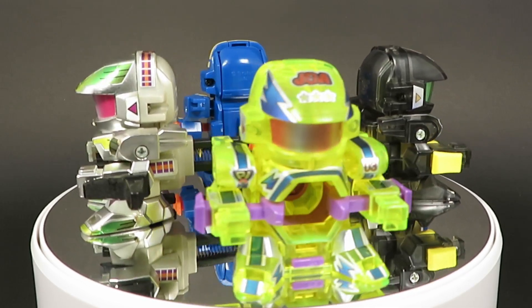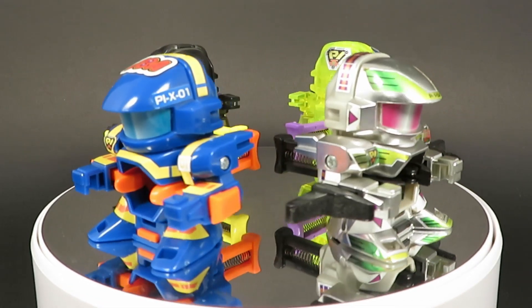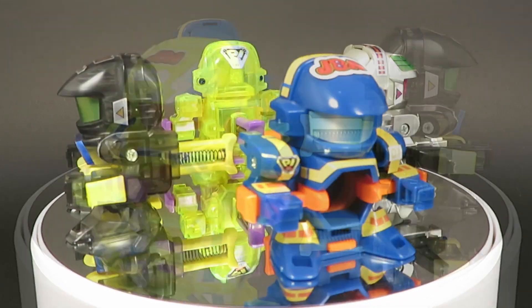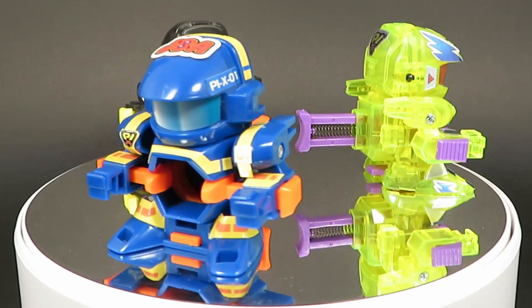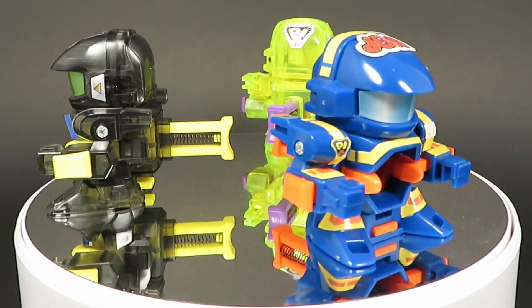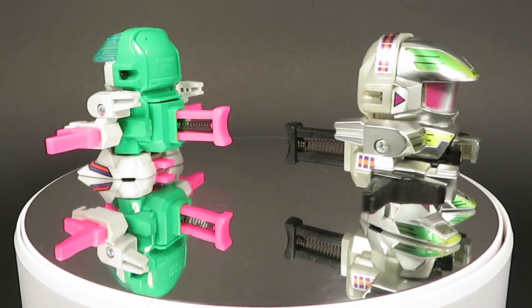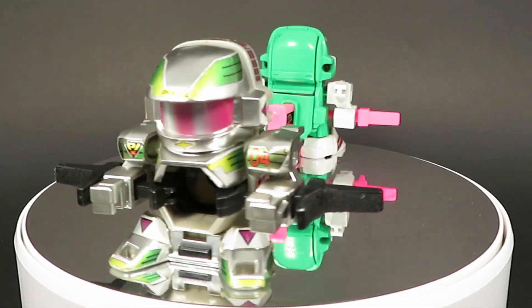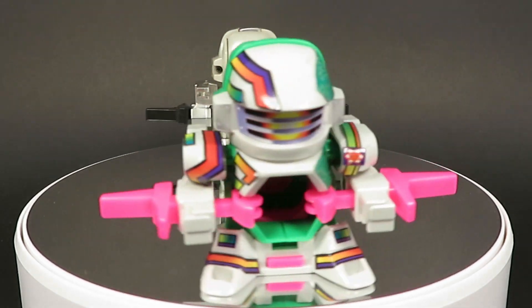None of these guys have product numbers, instead getting a little special symbol in the corner of the box similar to what limited edition Super B-Daman get. Proto 2 and 3 are actually just recolors of Proto 1—they come with the exact same parts, just different stickers and obviously a different core color. Proto 4 is a recolor of Iron Cyclops with different stickers, and Proto 4 stickers are the most different from Proto 1 to 3.